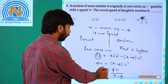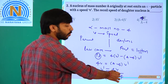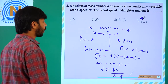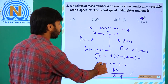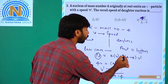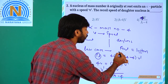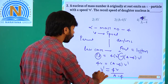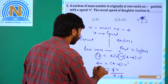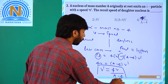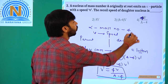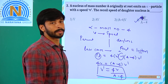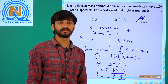So V dash equals 4V by (A minus 4). In the opposite direction to the alpha particle, the fourth option is the correct answer. Thank you very much.